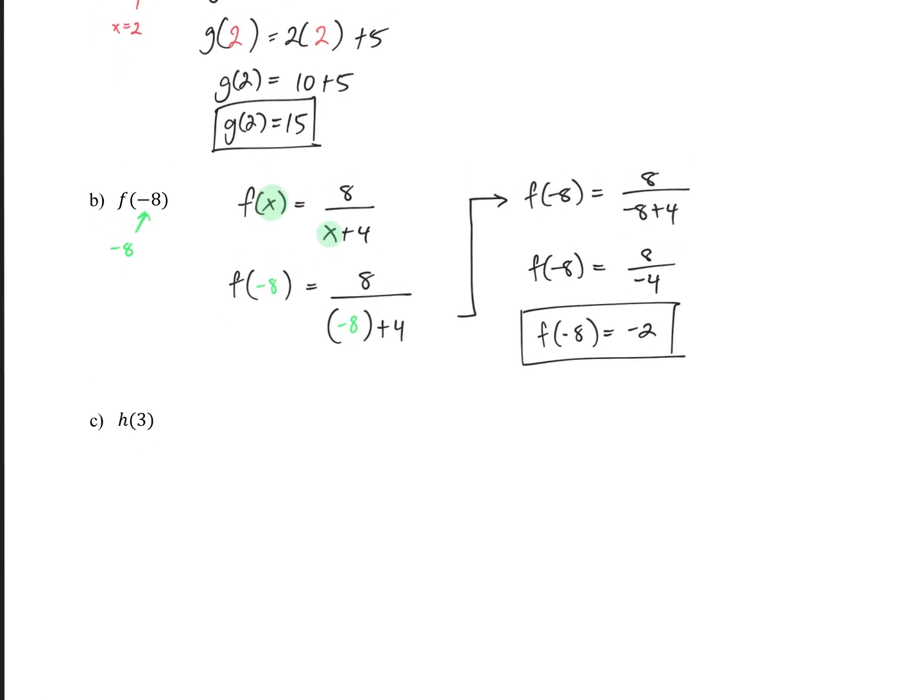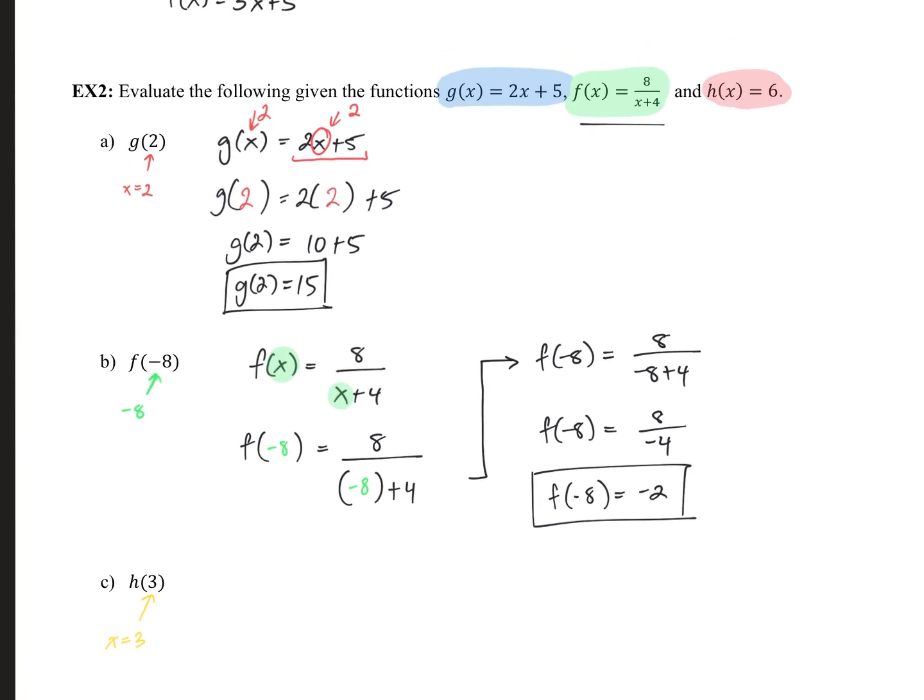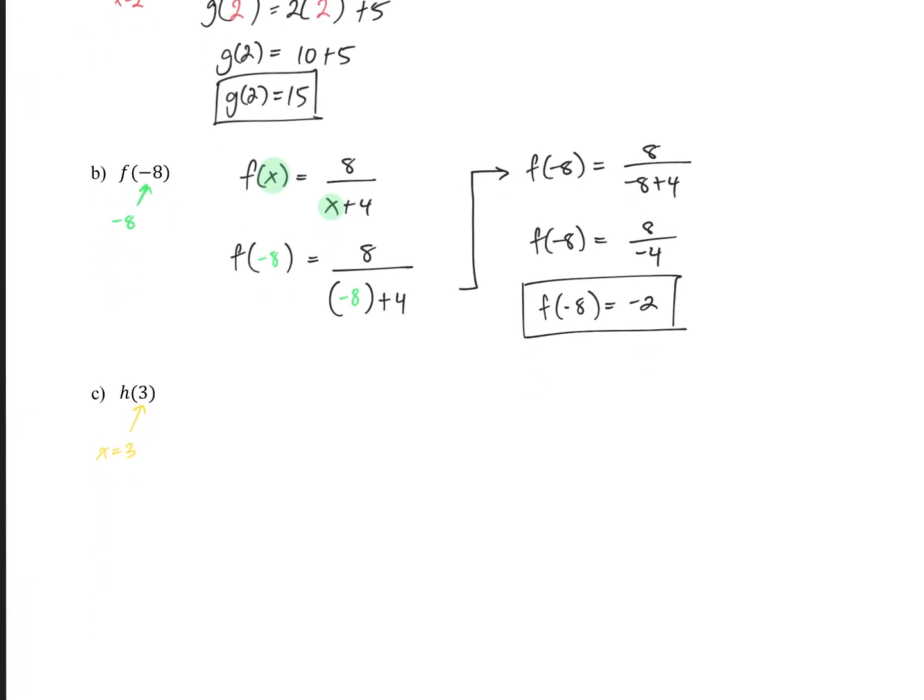Okay, let's take a look at c. c says h of 3. So, wherever we see an x value, we're going to replace it with 3. So, what was h? h is equal to 6. So, h of x equals 6. So, wherever we see x, we're going to replace it with 3. Oh, you know what? That's weird. There is no x value there.